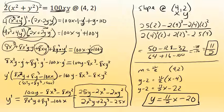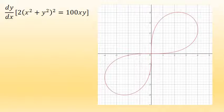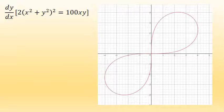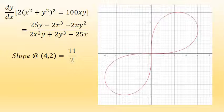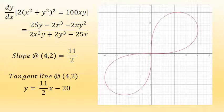To review: to find the equation of the tangent line to this equation at the point (4, 2), I first took the derivative with respect to x, which was (25y − 2x³ − 2xy²) all over (2x²y + 2y³ − 25x). I then substituted the point (4, 2) for x and y and found that the slope of the tangent line was 11/2, and then found that the tangent line at that point was y = (11/2)x − 20.